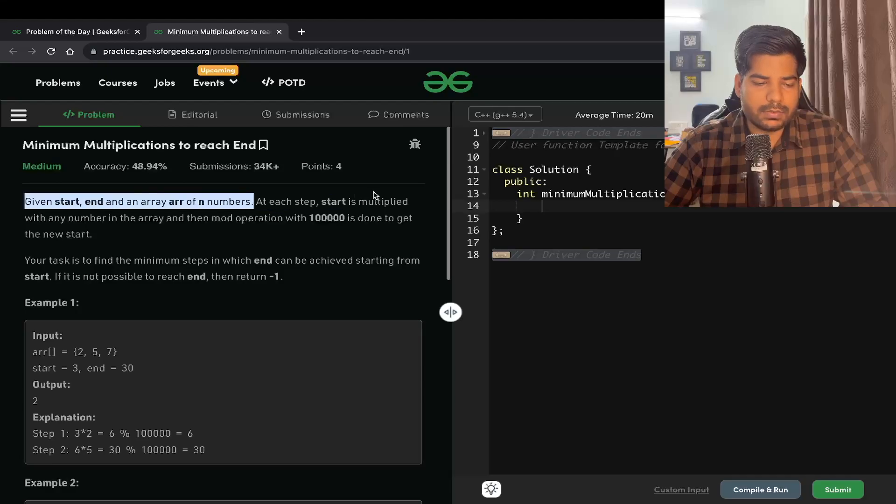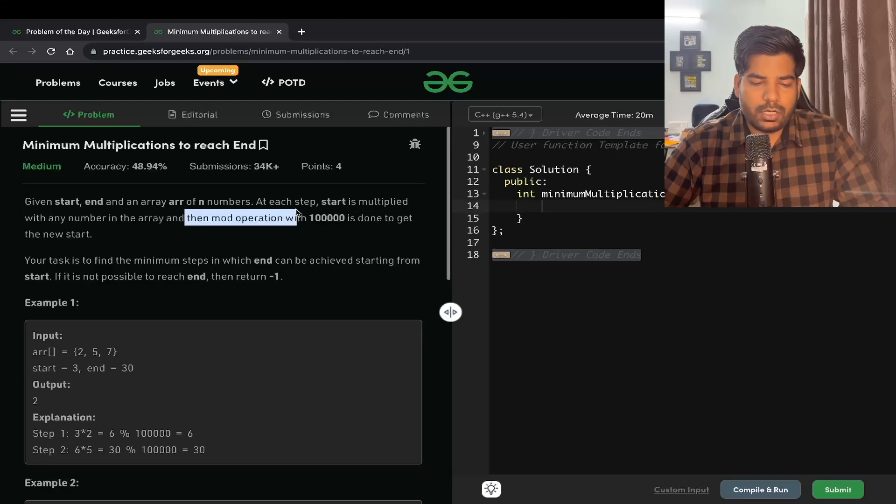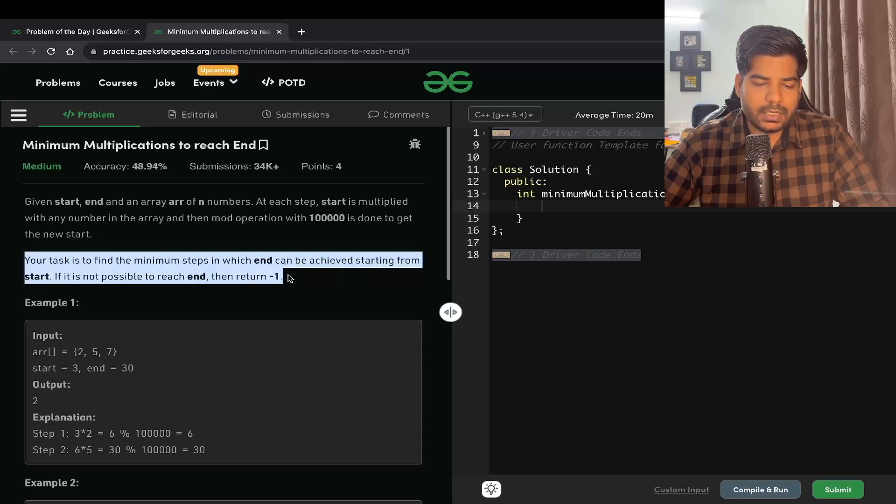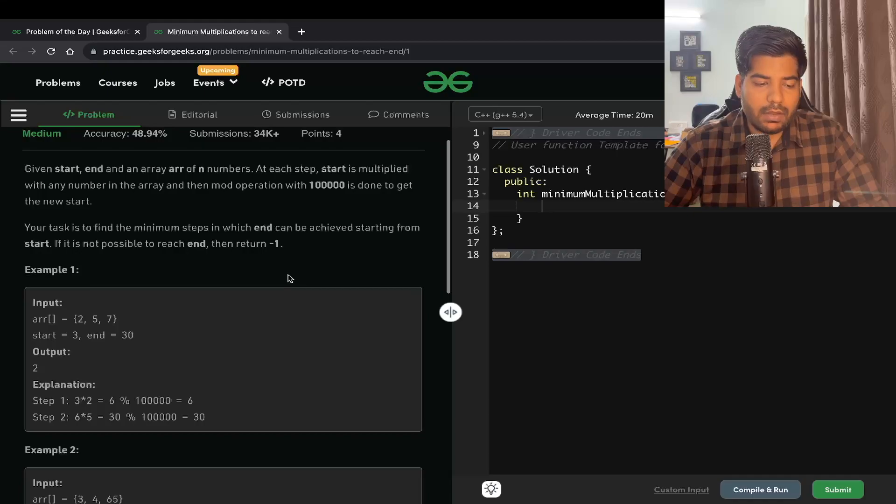At each step, start is multiplied with any number in the array, and then we do a modulus operation with 10 to the power 5. This is done to get the new start. Your task is to find the minimum steps in which end can be achieved starting from start.